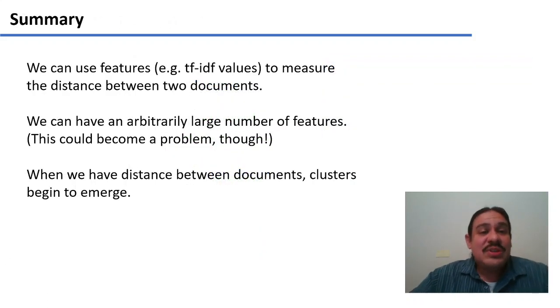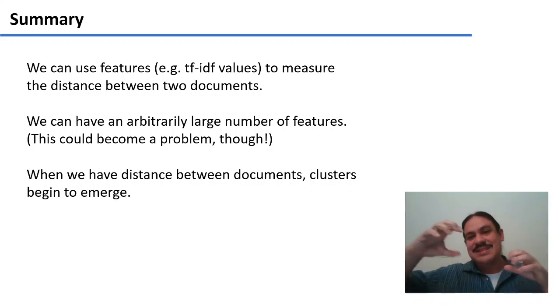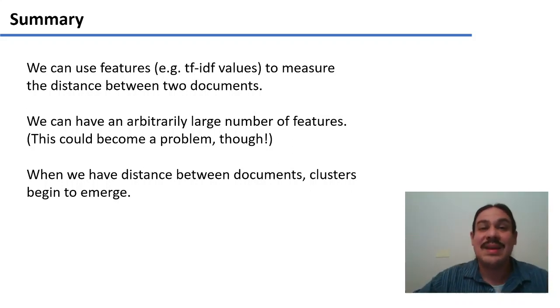In summary, we can use features to measure the distance between two documents, be it in three dimensions, be it in four dimensions, or in any number of dimensions that we want. We can have an arbitrarily large number of features or dimensions, but this is going to become a problem if it's too large. And we're going to be dealing with this in subsequent videos and weeks. But for now, when we have a system of features, we can calculate distances between documents. And when we do this, documents that are very close together are going to start to cluster. And documents that are very far apart are going to be in separate clusters. And in subsequent videos, we're going to look at one specific example of a clustering algorithm called k-means.